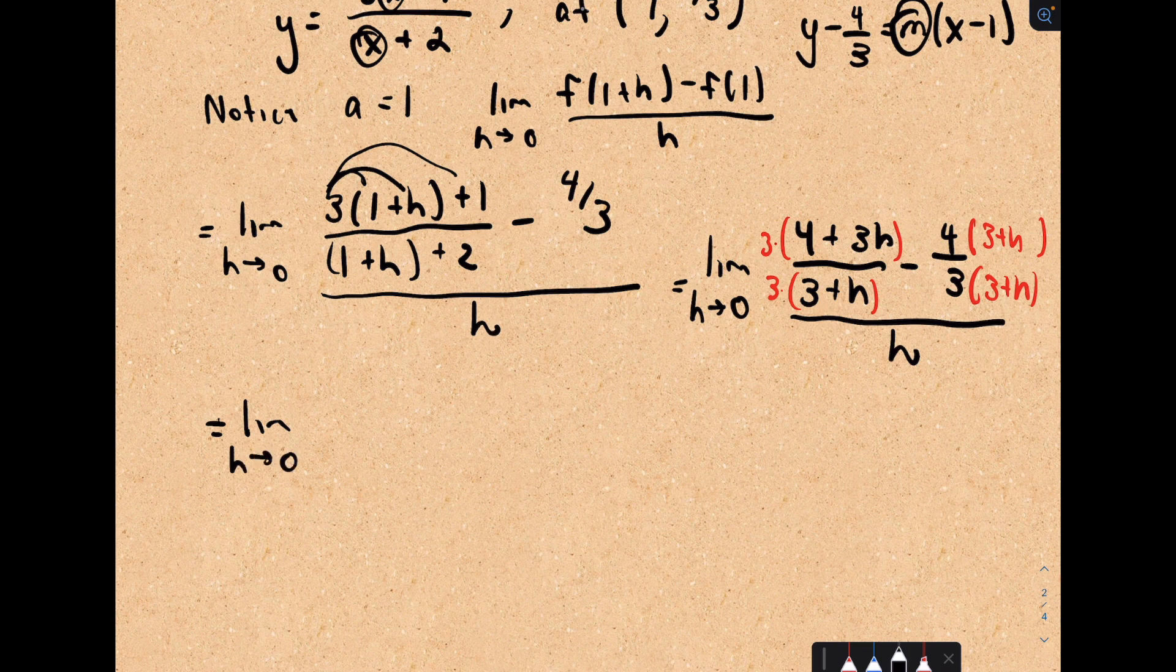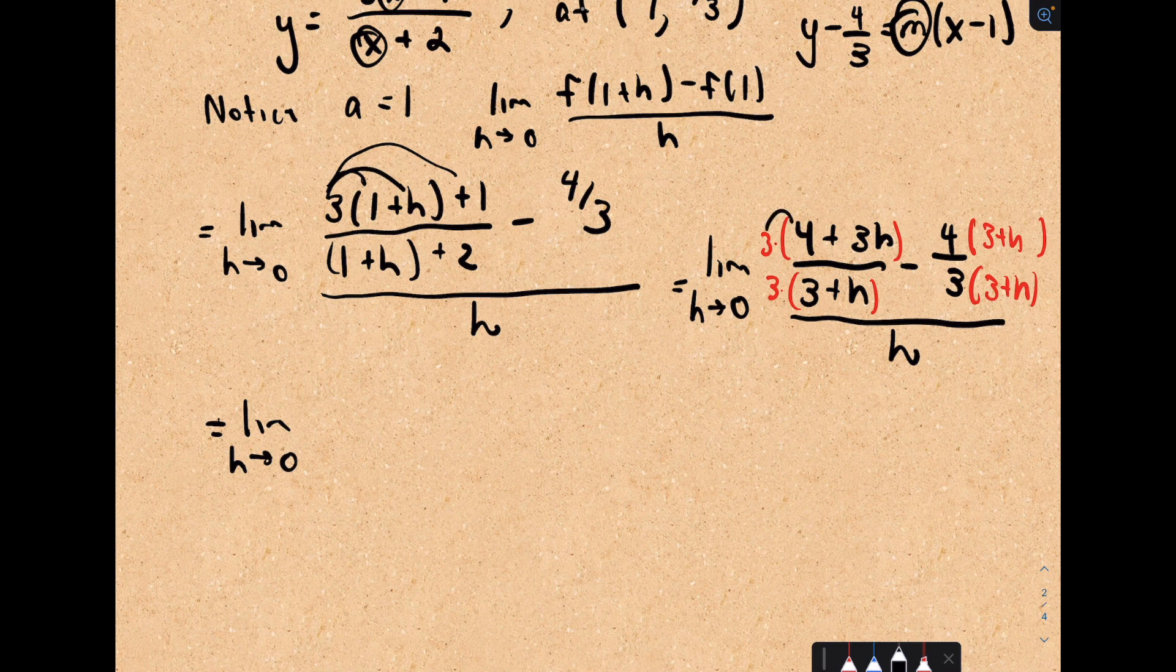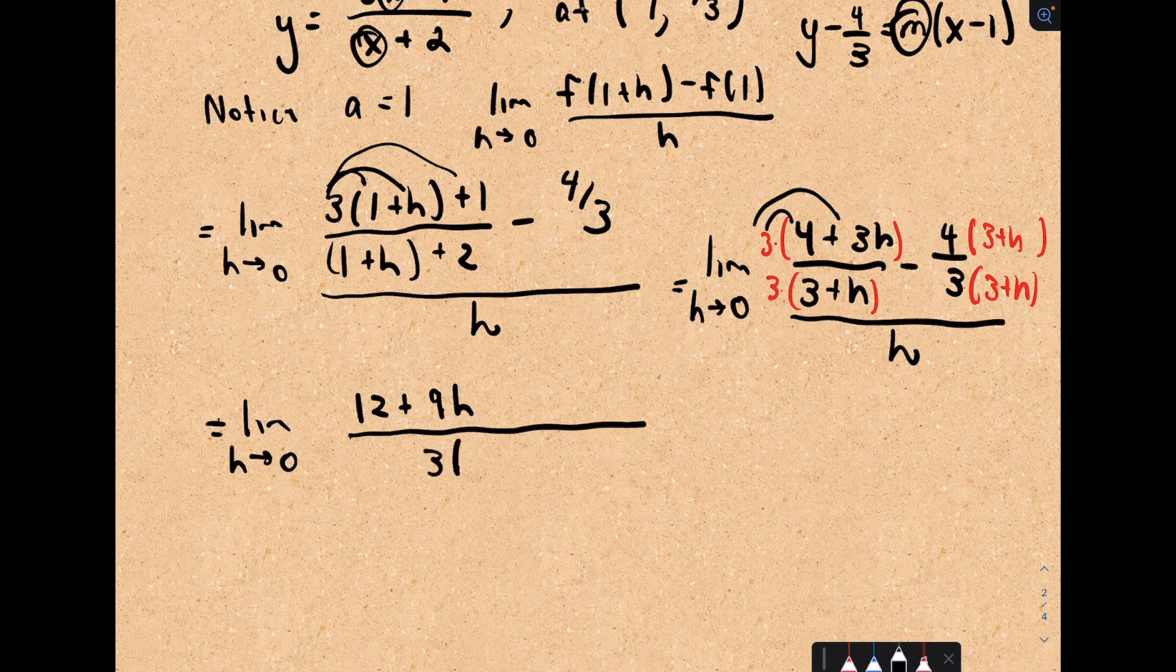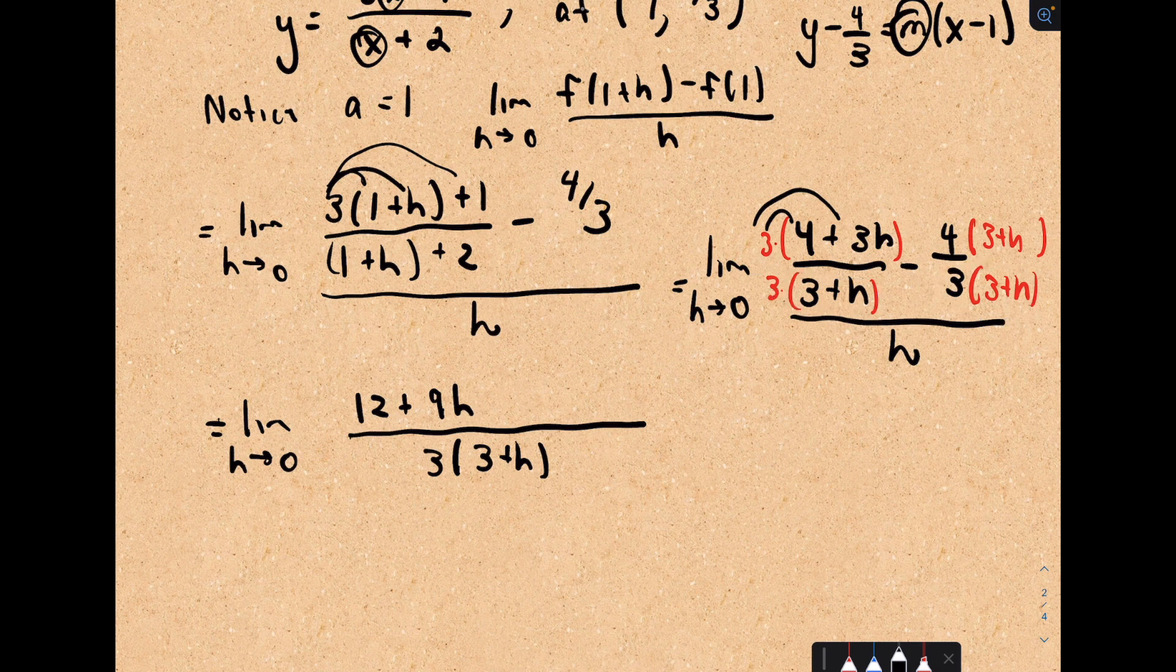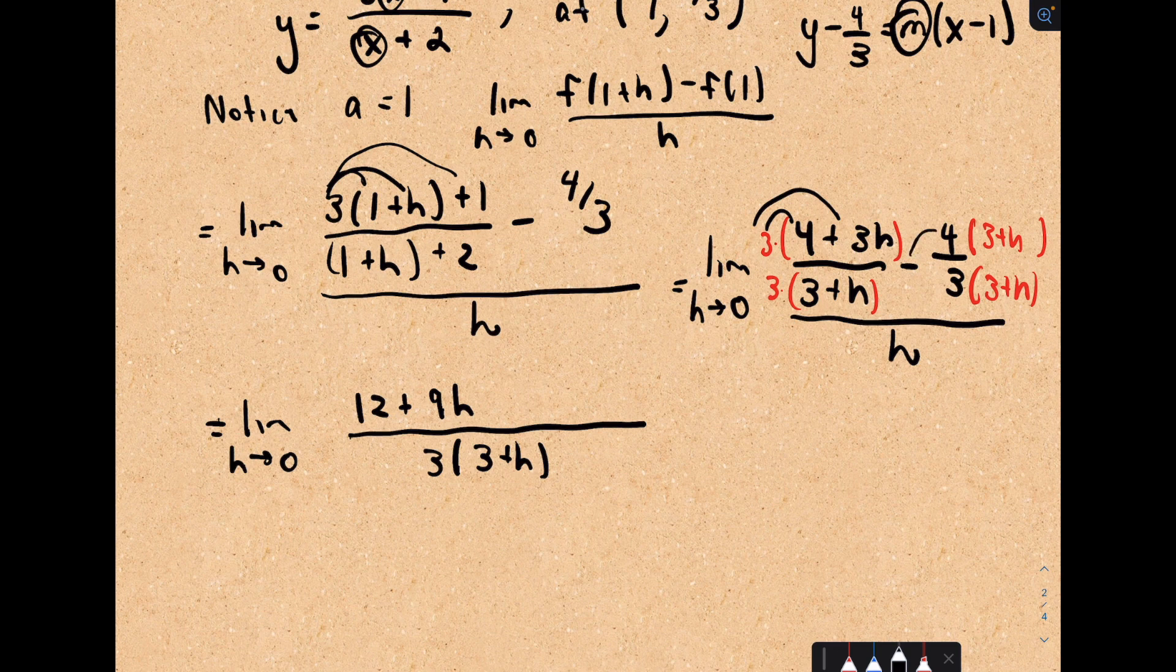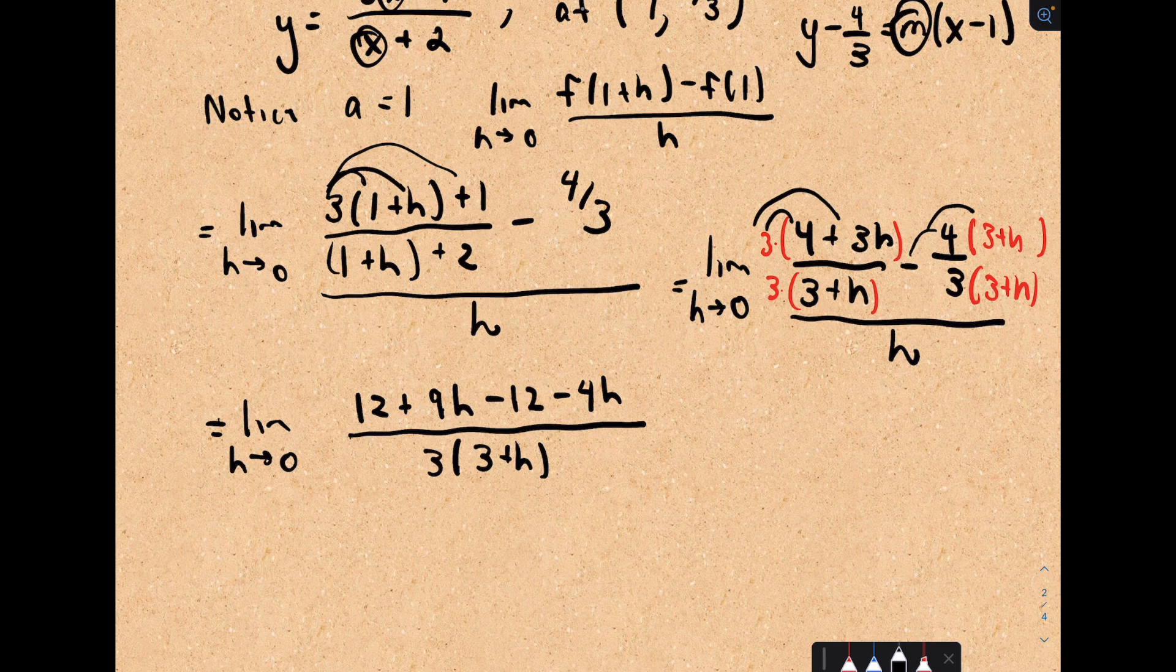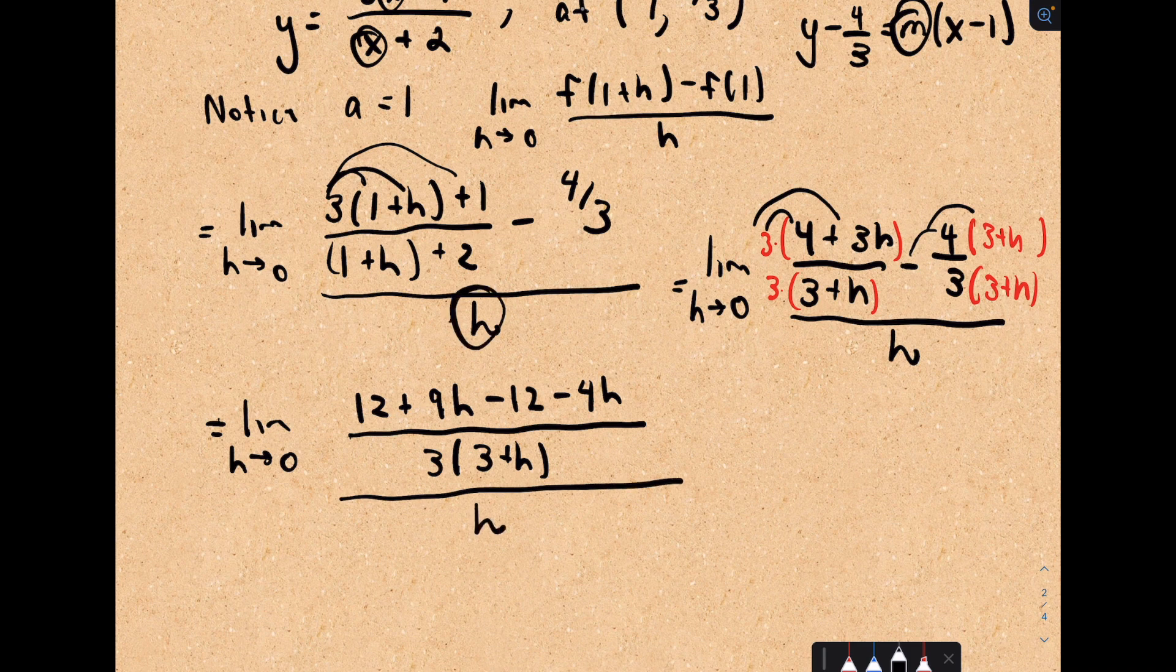This is the limit as h approaches 0. So in the numerator, it looks like we're going to get 3 times 4 is 12, 3 times 3h is positive 9h. We've got this common denominator now of 3 times 3 plus h. I'm going to group my fractions in the numerator together. It looks like we would have minus 4 times 3 or minus 12, and then we would have negative 4 times h or negative 4h.